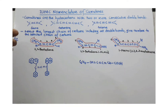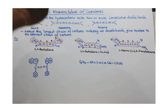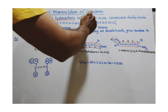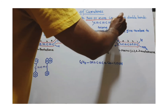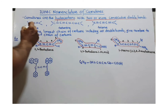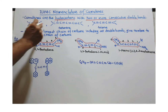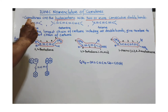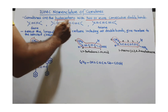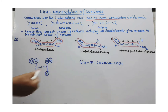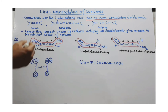IUPAC nomenclature of cumulenes. Cumulenes are hydrocarbons with two or more consecutive double bonds. Consecutive means one after another. There are two consecutive double bonds in this compound, four consecutive double bonds in this compound, and three consecutive double bonds in this compound.